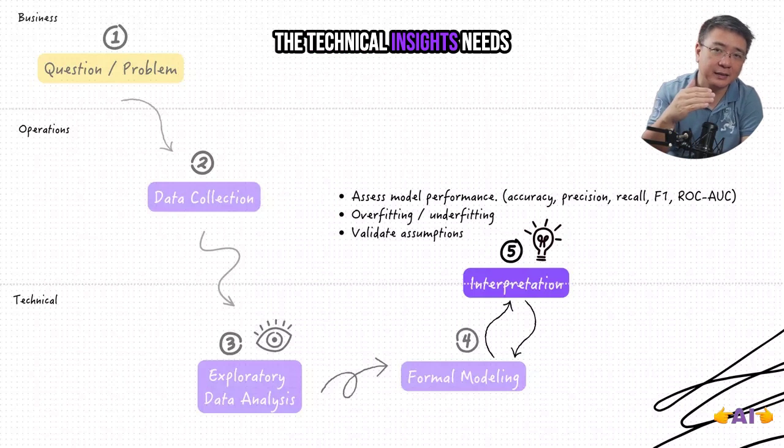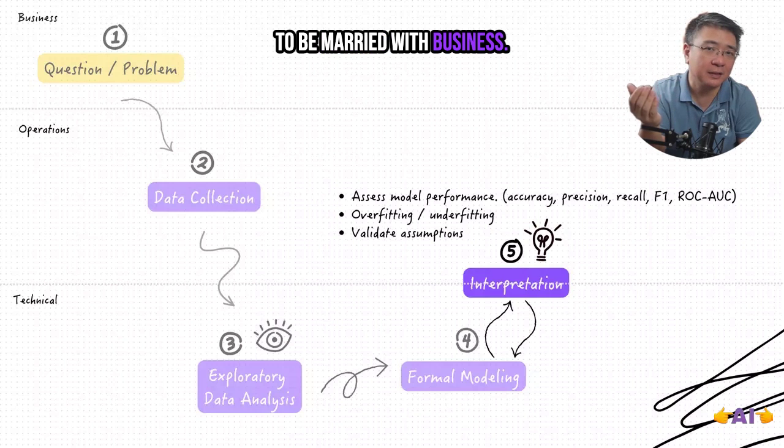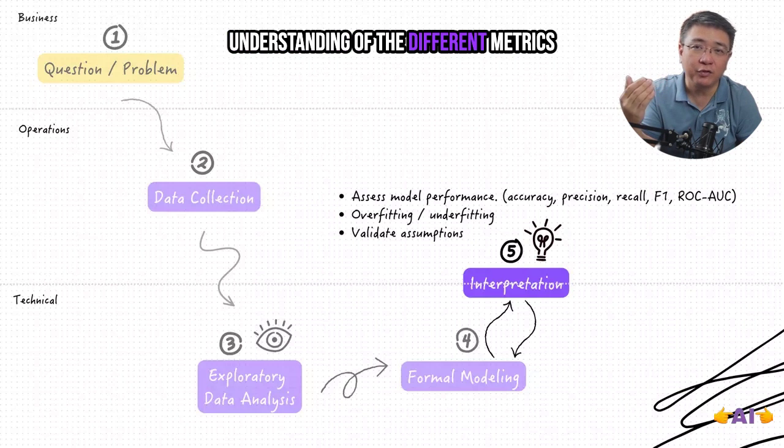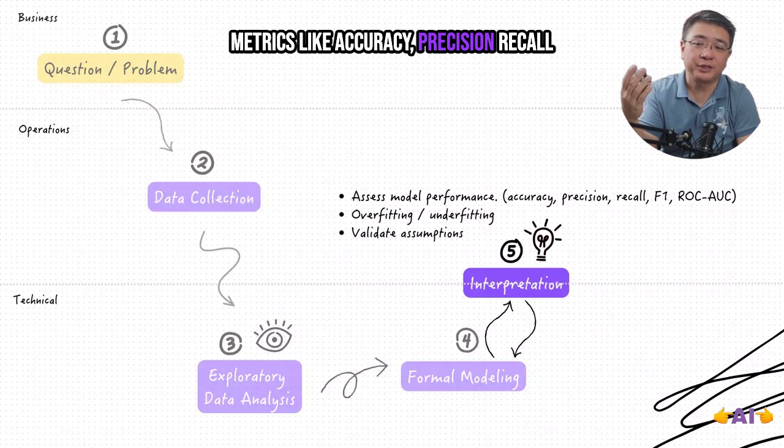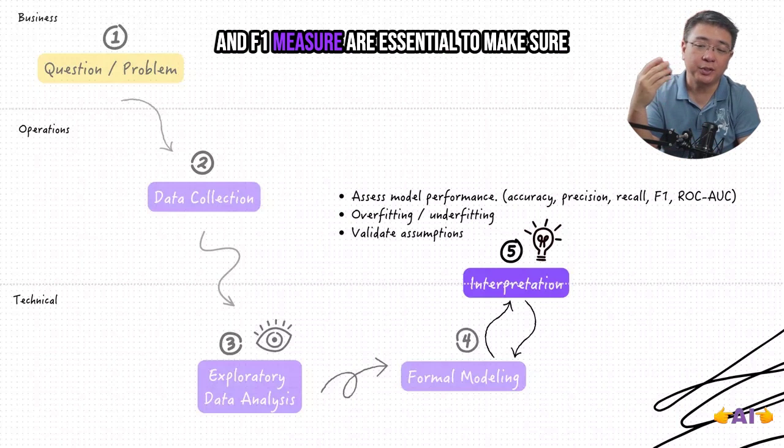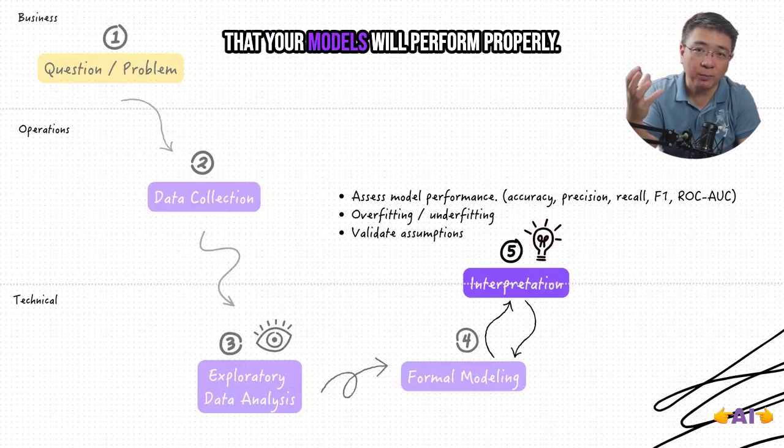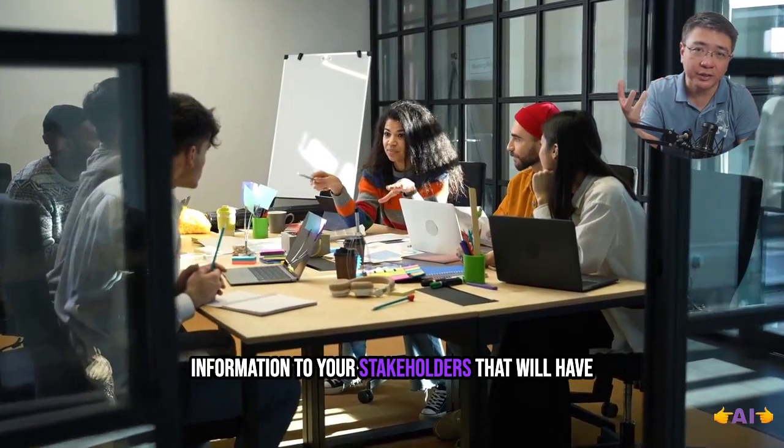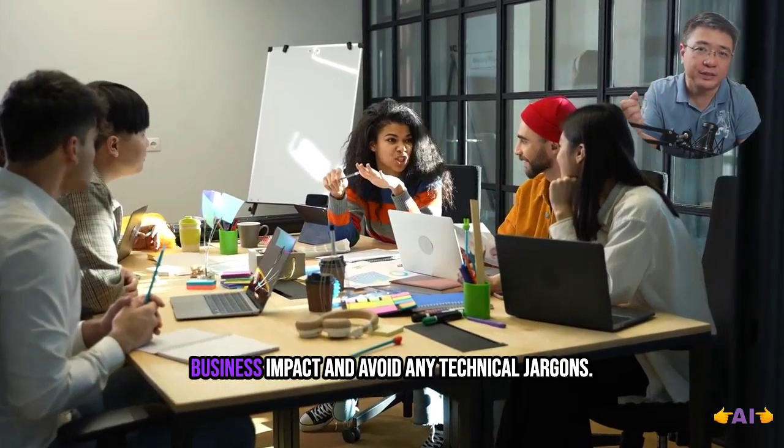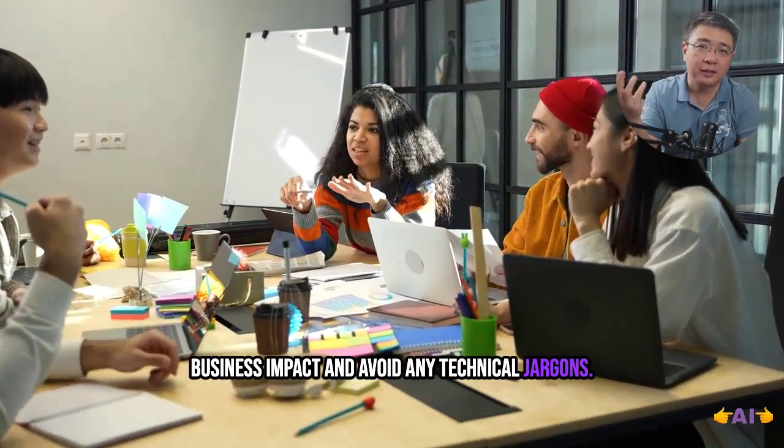Here, the technical insights need to be married with business understanding. You will also need to have a good understanding of the different metrics to measure your model's performance. Metrics like accuracy, precision, recall, F1, and ROC-AUC are essential to make sure that your models will perform properly. And of course, you need to interpret this information to your stakeholders that will have business impact and avoid any technical jargons.